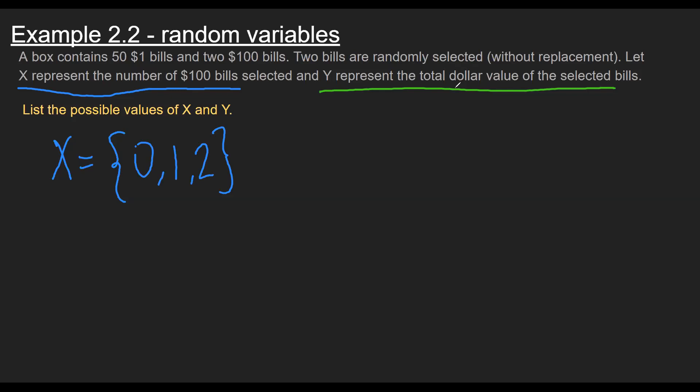Now, for Y, it's a little bit trickier, but it's the same idea. The thing now is I'm trying to capture the total dollar value. And I can actually use my answer from X here. Well, if I look here, this means I have no hundreds. Well, if I have no hundreds, and there are only two types of bills, they both have to be $1 bills. So that means one option for Y is two. Again, this represents, instead of the number of bills we're selecting, but the dollar value, right? Again, highlighted right here.